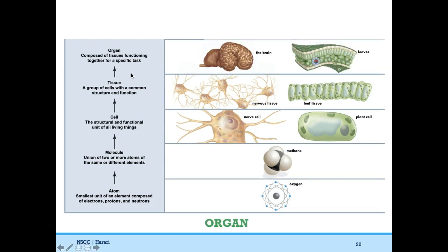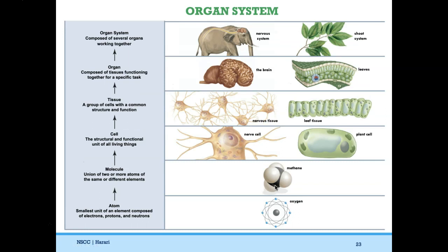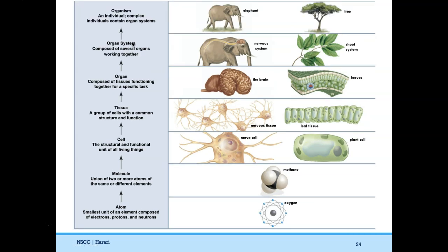Tissues make up organs — an organ is composed of multiple tissues that all perform a specific task. The brain is an organ made up of nervous tissue; nervous tissue is made up of nerve cells; nerve cells are made up of molecules, which are made up of atoms. Organ systems are composed of several organs working together, and that's what makes an organism. A tree is an organism composed of different organ systems — shoots, branches, trunk, and roots. A leaf, which is an organ, is made up of different tissue types, which are made up of cells, which are made up of molecules and atoms.